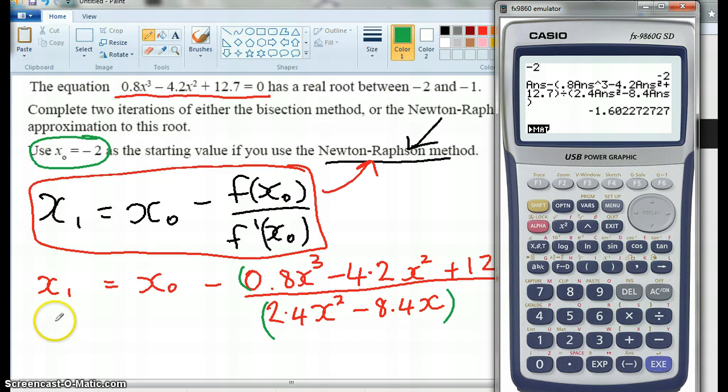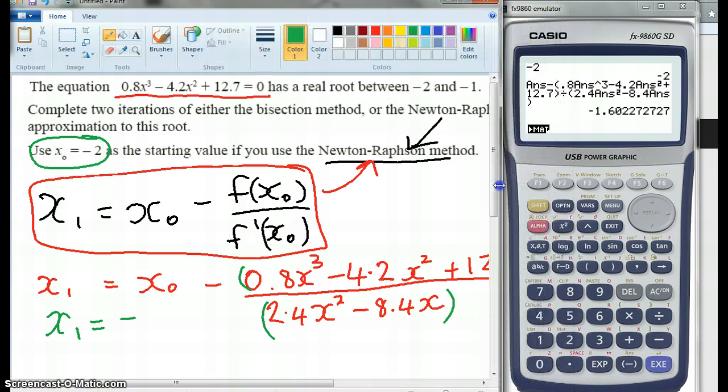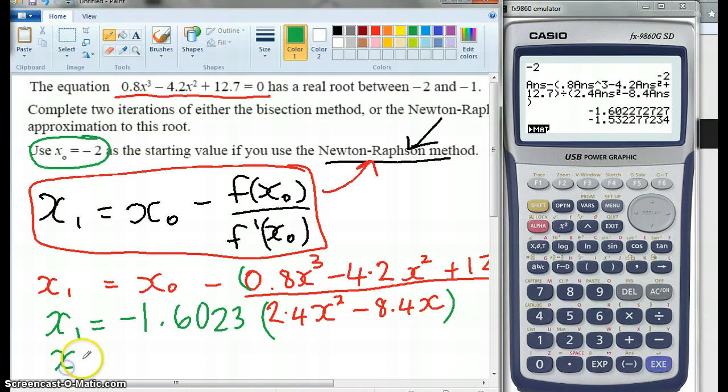So our x₁ equaled negative 1.6023. So our x₁ equaled, and then I hit execute, and so our x₂, because it's used x₁ as the answer, recursion, is negative 1.5323. Is that right? 5.323.